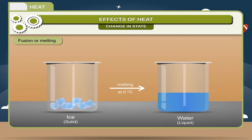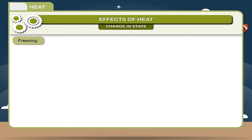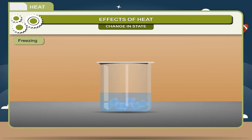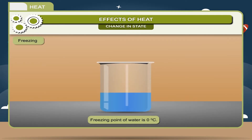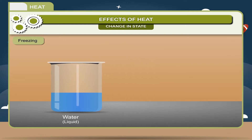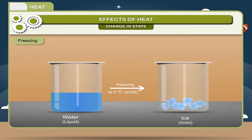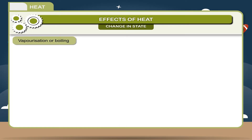Freezing: freezing is a process in which a liquid changes into solid by giving out heat at a constant temperature. The temperature at which freezing takes place is called the freezing point. For example, the freezing point of water is zero degree Celsius — water (liquid) freezing at zero degree Celsius gives rise to ice (solid).